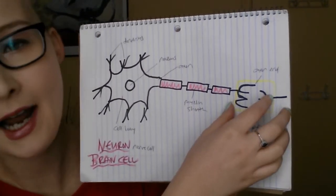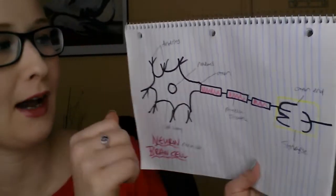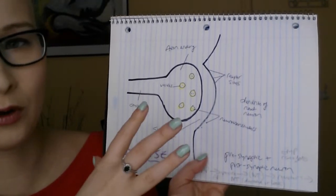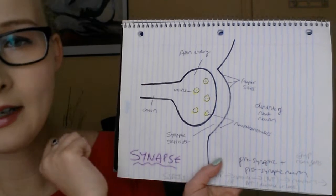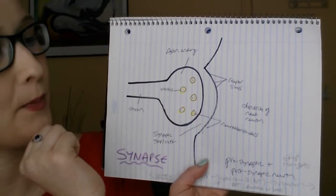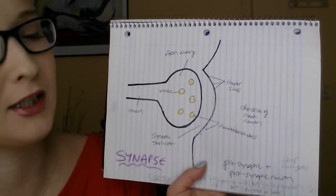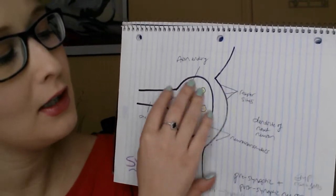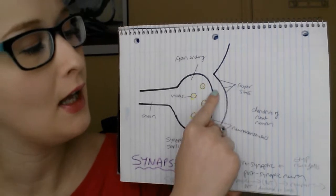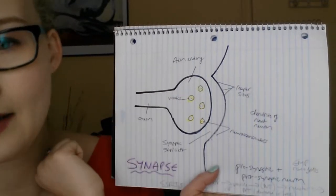Now I'm going to zoom in on the synapse section and enlarge it so you can see what's going on. Here is a depiction of a synapse. You have the axon ending — that's the presynaptic neuron — and the next cell over is the postsynaptic neuron. Fancy terms, but it just means the first cell and the second cell. These cells don't interact physically; they interact through electrical currents and don't actually touch. In between is the synaptic gap, or synaptic cleft, where the interaction occurs.